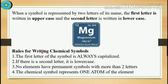Now we are going to see the rules for writing chemical symbols. The first letter of the symbol is always capitalized. If there is a second letter, it is in lowercase. No elements have permanent symbols with more than two letters. The chemical symbol represents one atom of the element.